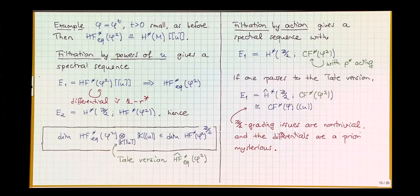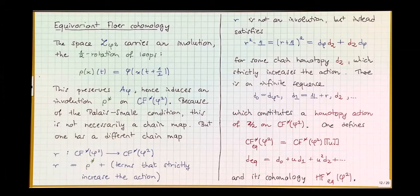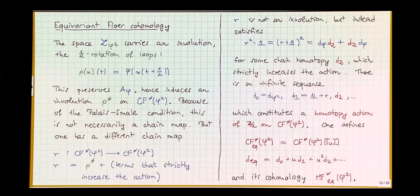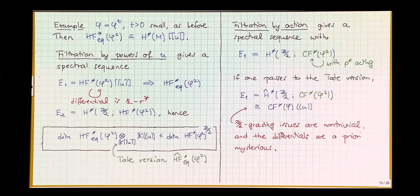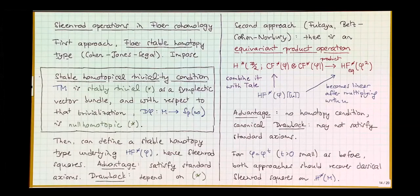These infinite-order correction terms are still manageable because, when I defined equivariant cohomology, the differential had the form 'something plus u times something else,' leaving room for u², u³ terms — and this is exactly the moment you need them. This is a homotopy action rather than a strict action, and this is exactly the framework in which equivariant cohomology naturally lives.